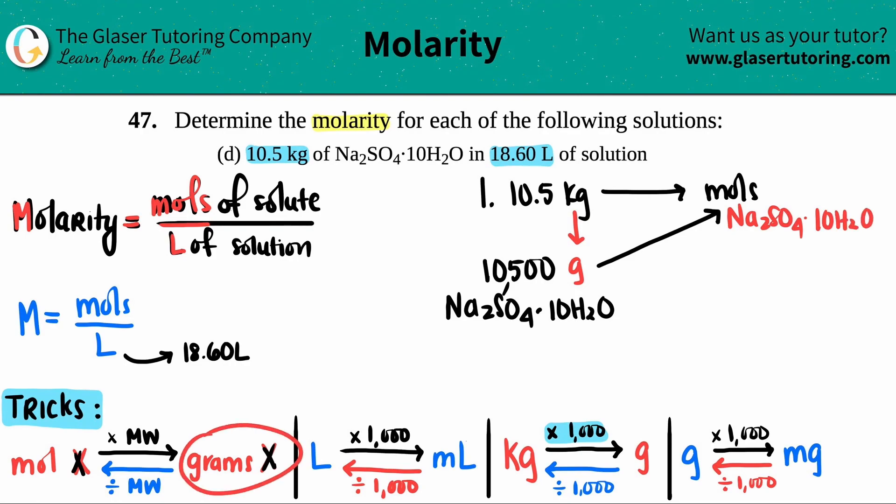I'm going from grams to moles. I'm going this way. All I have to do is take that number and divide it by the molecular weight. So that's another extra step - we need to find the molecular weight of the compound that they gave us, Na₂SO₄·10H₂O.